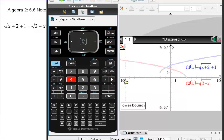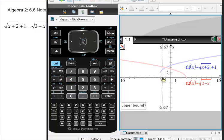And then we have to tell the calculator where to look. So you're going to use your mouse, and you're going to tell the calculator to start looking somewhere to the left-hand side of the point of intersection, and then to stop looking on the right-hand side of that point of intersection.